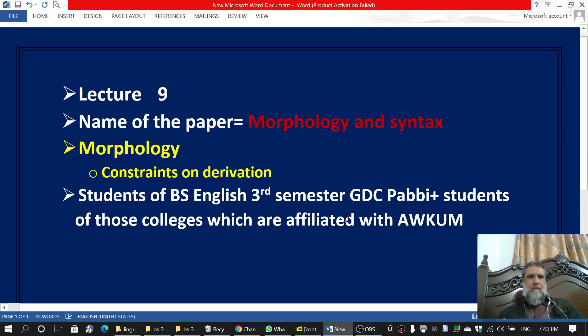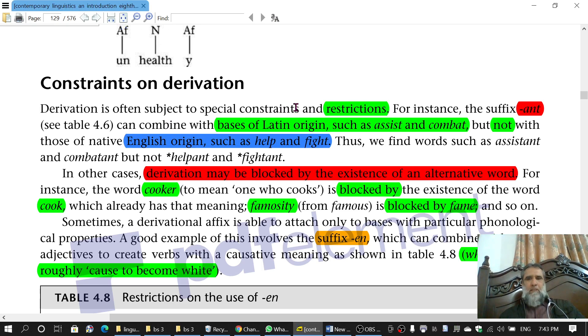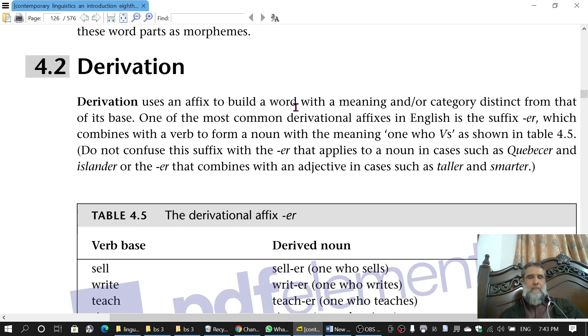Bismillahir Rahmanir Raheem. This is lecture number nine. The name of the paper is Morphology and Syntax. The chapter is Morphology and the topic is Constraints on Derivation. This lecture is specifically for the students of BS English third semester GDC PIB and also for students of colleges affiliated with Abdul Ali Khan University.